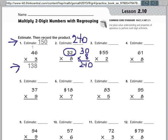So now that I found my estimate, I'm going to multiply and find the real answer. So when we multiply two-digit numbers, we always start by multiplying our number on the bottom by our ones.